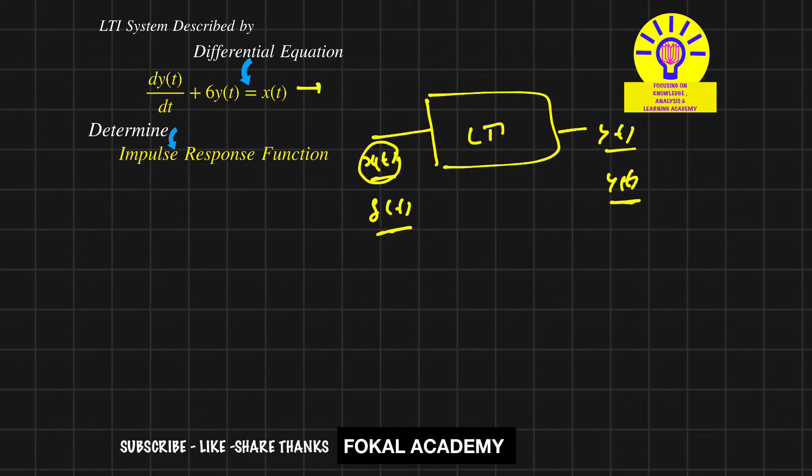First of all, apply the Laplace transform for this equation. Then it becomes: Laplace transform for this function equals s into Y(s) plus 6 into... so for y(t), Y(s) equals... so x(t) means δ(t) that is 1. Now here Y(s) is common. So Y(s) = 1/(s+6).